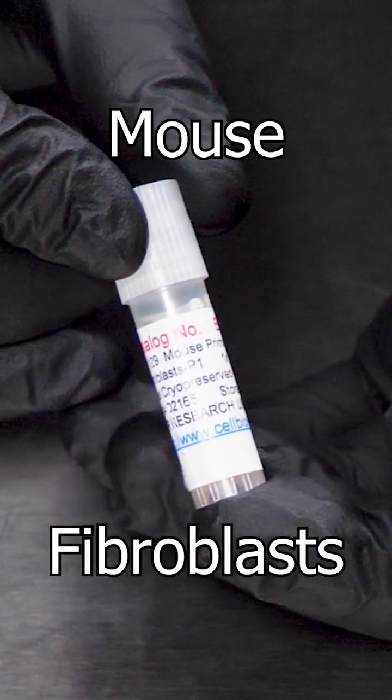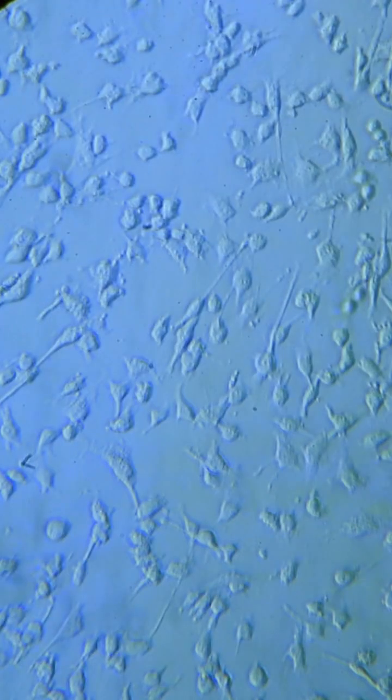The cells we'll be growing today are mouse fibroblasts, which we chose because they grow really fast and are also very easy to grow, so are a good first test of the machine.